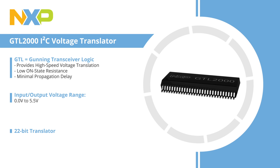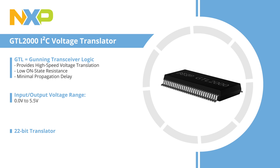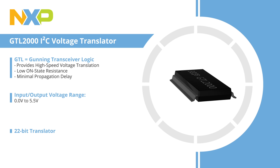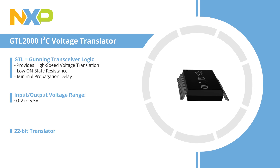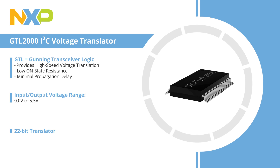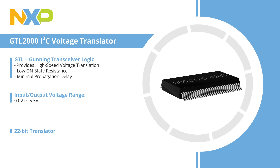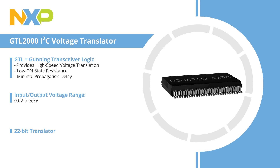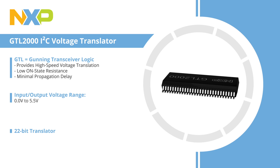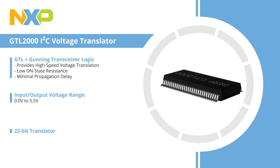A serial interface, such as I2C, is often used for board-level communication between various ICs. If a system uses different supply voltages for the microprocessor and for peripheral devices, then a level translator is required if I2C is to be utilized.